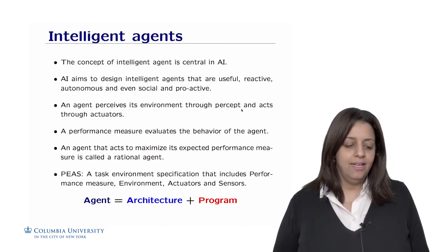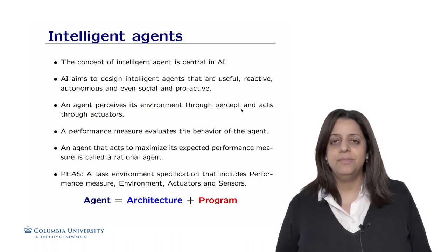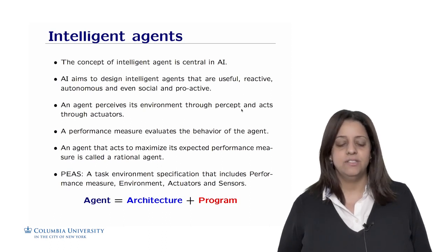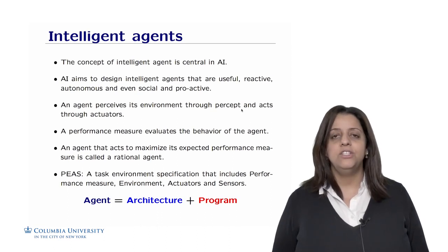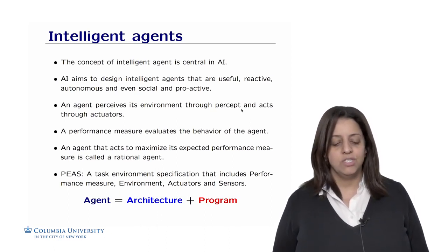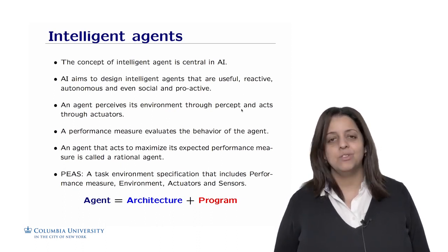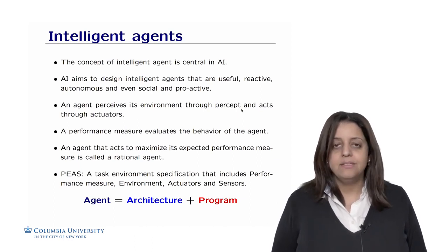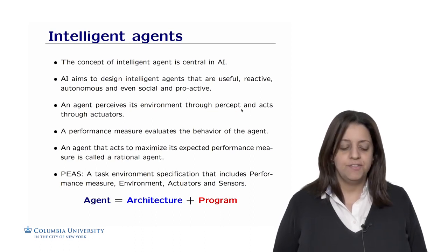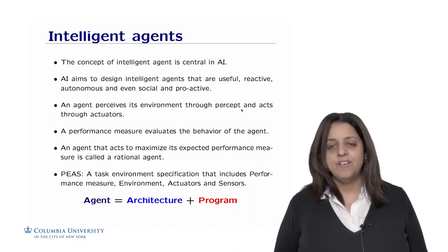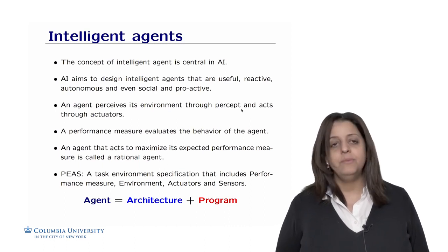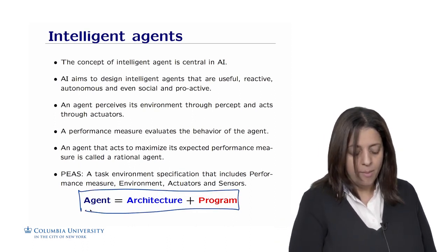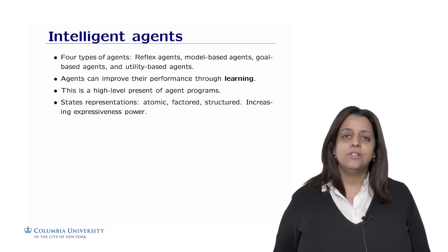We went through several concepts today: the concept of rational agent, different types of environments and agents, and different types of state representations. The concept of an intelligent agent is central in artificial intelligence — AI aims to design intelligent agents that are useful, reactive, autonomous, and even social and proactive. An agent perceives its environment through percepts and acts through actuators, and a performance measure evaluates the agent's behavior. An agent that maximizes its expected performance measure is called a rational agent. We also saw the PEAS task environment specification: performance measure, environment, actuators, and sensors.